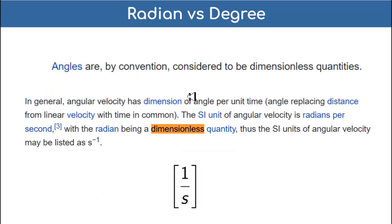Here is the problem as I see it. Angles are by convention considered to be dimensionless quantities. In general, angular velocity has dimension of angle per unit time. The SI unit of angular velocity is radians per second, with the radian being a dimensionless quantity. Thus the SI units for angular velocity are listed as s⁻¹, or 1 over s.